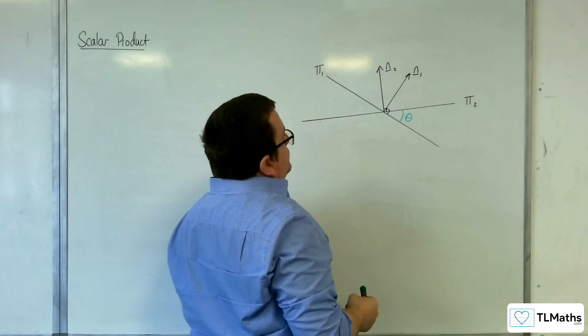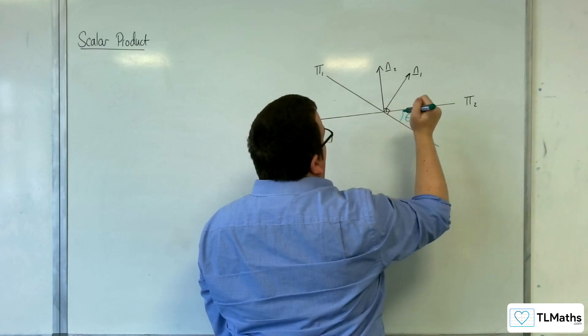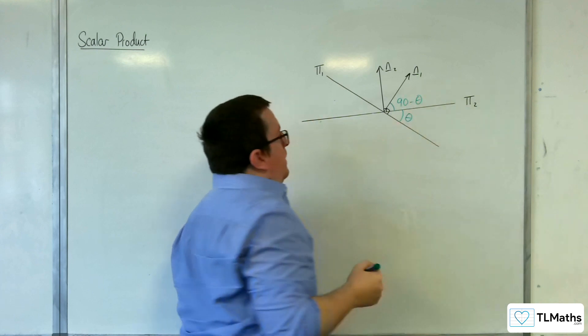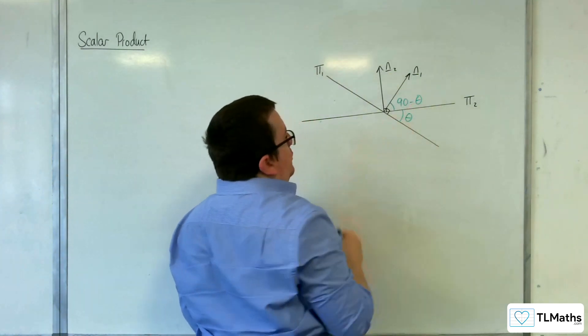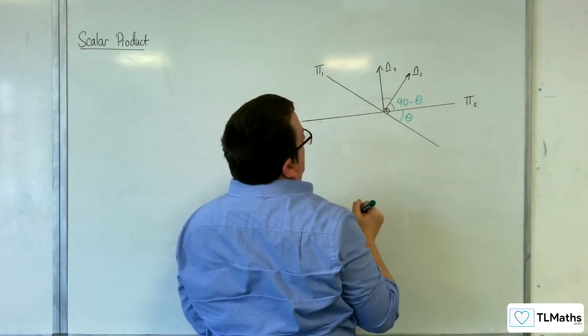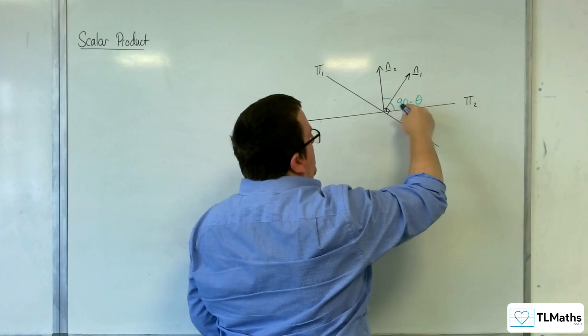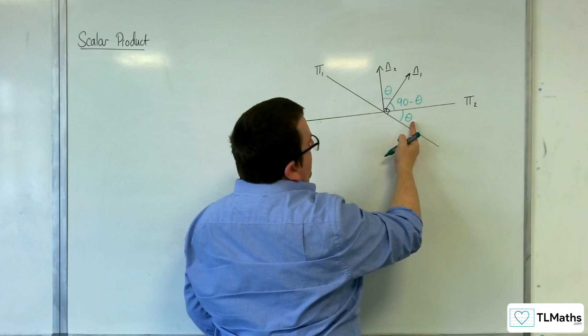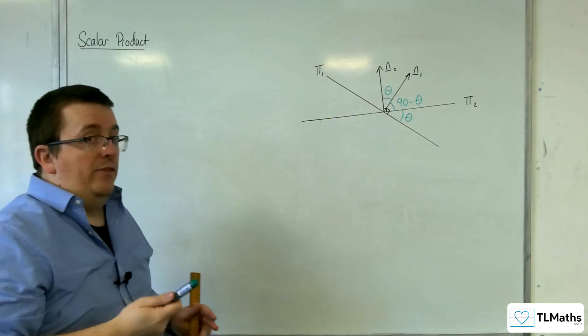And what I know is that the angle between pi 2 and n1 would be 90 take away theta. Then if I try to work out this angle, if these two angles have got to add up to 90 degrees, then 90 take away this would just leave me with theta. So the angle between the two planes is the same as the angle between the two normal vectors. And that is the key.